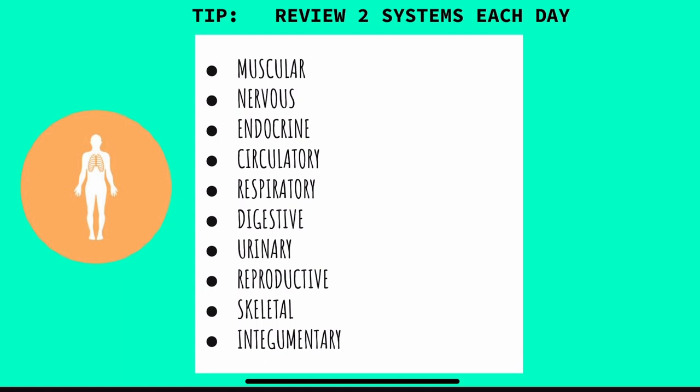I would go through the Quizlets that I mentioned and the book that I mentioned before in the beginning. That one has a really good overview of each system. The muscular system, nervous, endocrine, circulatory, respiratory, digestive, urinary, reproductive, skeletal, and integumentary, the skin. So yeah, just do two systems each day. Don't take a lot of systems and try to cover it, take it slow so you can retain the knowledge.